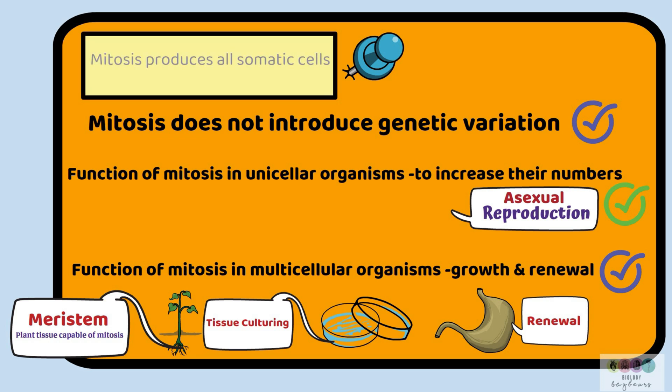Mitosis produces all somatic cells — these are body cells, so not sex cells, not gametes.